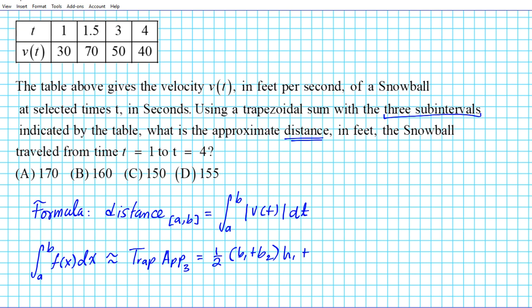And then the next trapezoid would be one half b2 plus b3 times height two, and the third trapezoid is one half b3 plus b4 times height three.